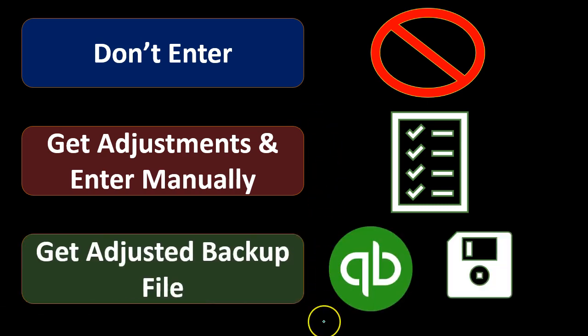The other option is if they're making the adjustments in QuickBooks — we might give them the QuickBooks file and they can make the adjustments directly in QuickBooks. If they do that, we have two options: they can give us a report from QuickBooks similar to an Excel report which gives us the journal entries we can manually input, or they can make a backup file from QuickBooks and we can just keep the backup file.